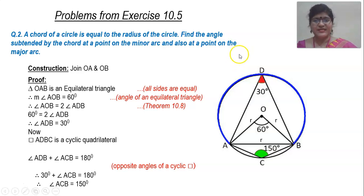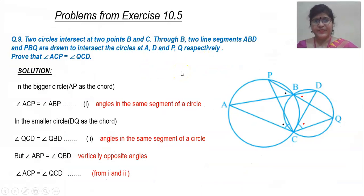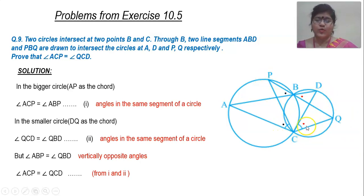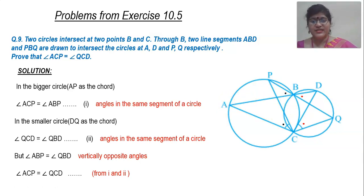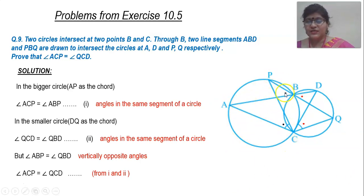Let us look at another question from the same exercise — question number 9, which is also very important. You have to prove that angle ACP and angle QCD are equal. Take the larger circle. In this larger circle, look at arc AP. If I join these two points A and P, I get chord AP, which divides the circle into segments — this becomes the major segment. Look at the angles in the major segment: angle ACP will be equal to angle ABP, because they are angles in the same segment.